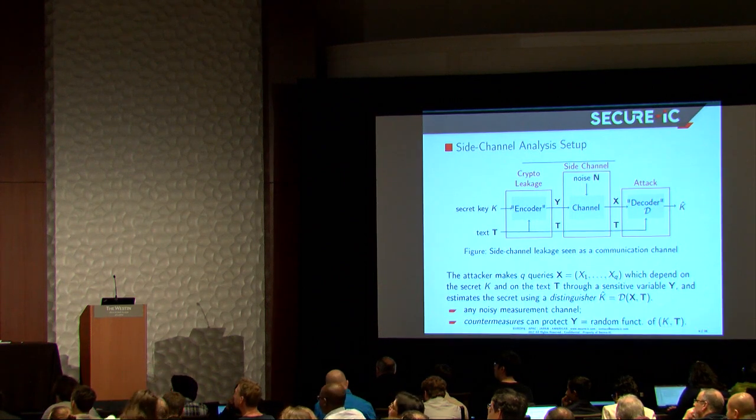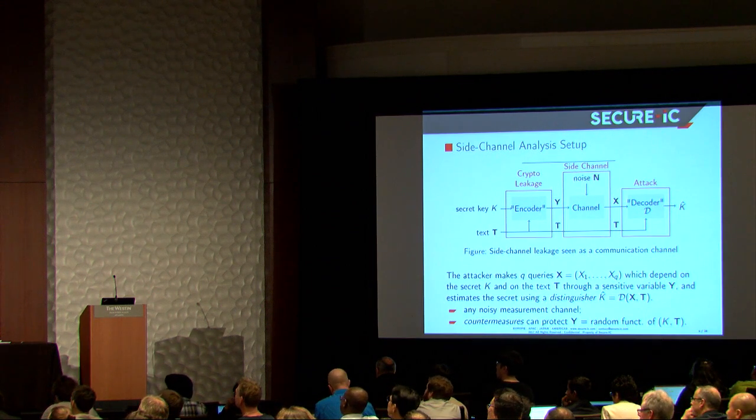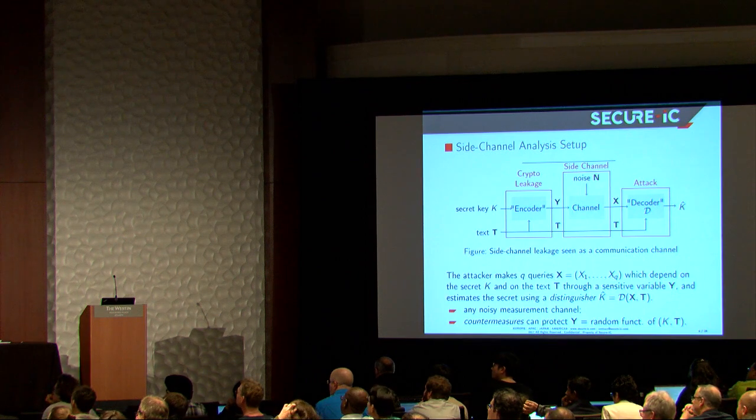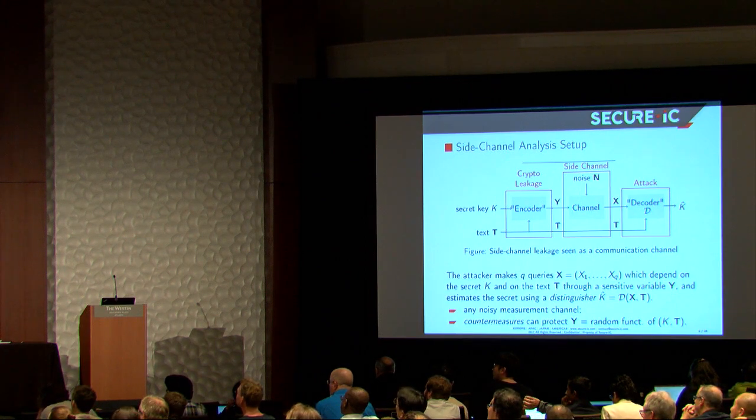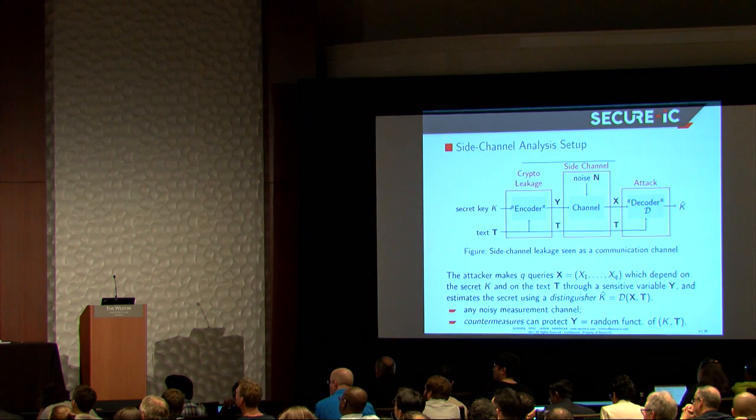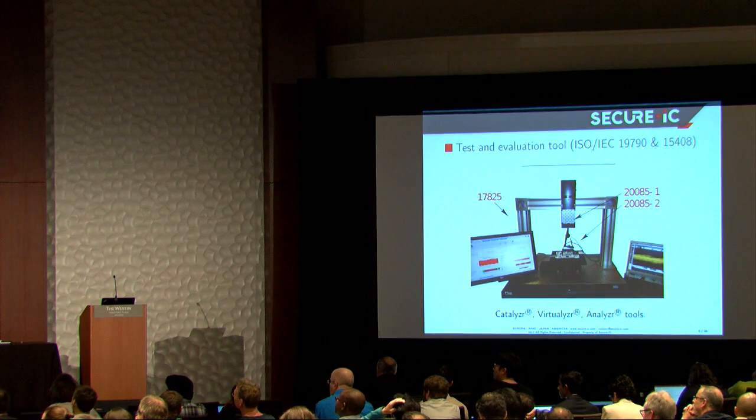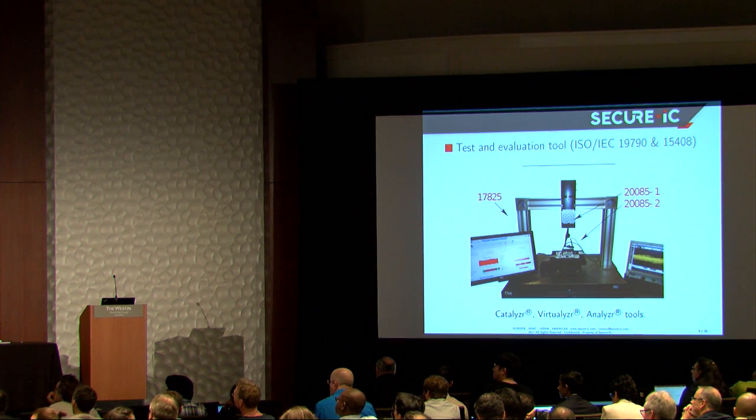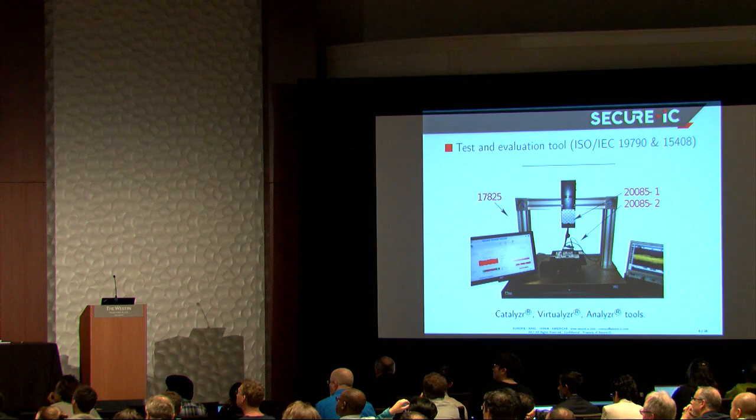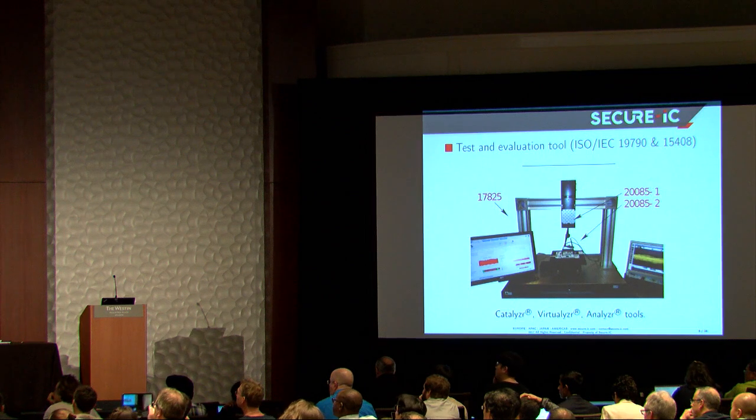And so the attacker can take X and T and try to do his best to recover the key. So we make no assumption on the channel. The noise can be whatever distribution. And there can be some countermeasures - we completely abstract them away. You see in the encoder, there can be some random variables which are unknown by the attacker, like shuffling, masking, these kind of things. Just to show in practice, the key is in this device. The measurement and the noisy setup is the probe here, and what we get, the attacker will measure this thing and do some analysis here, so apply the distinguisher to enumerate all the keys.